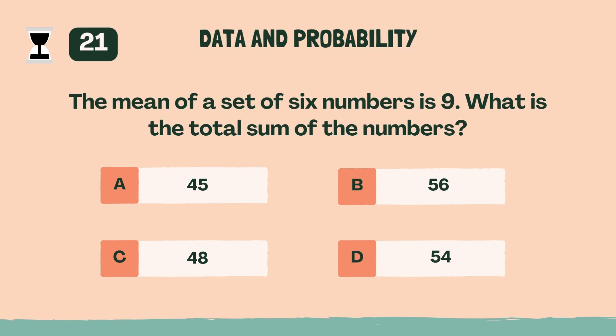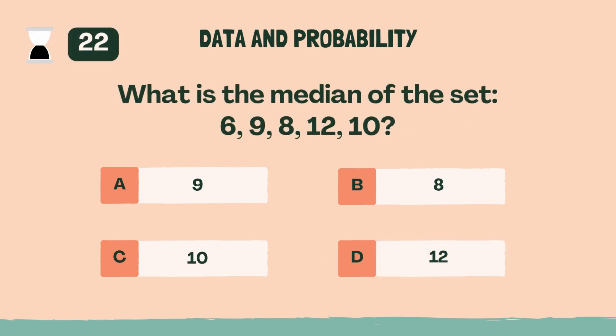The mean of a set of 6 numbers is 9. What is the total sum of the numbers? D, 54. What is the median of the set 6, 9, 8, 12, 10? A, 9.